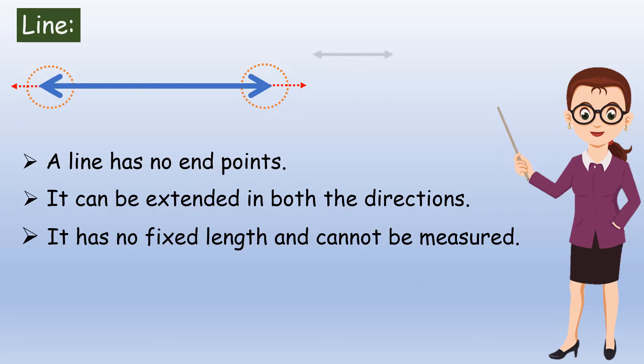It is denoted by a small letter or two capital letters marked on it. The symbol for a line is written as Line AB or Line BA.